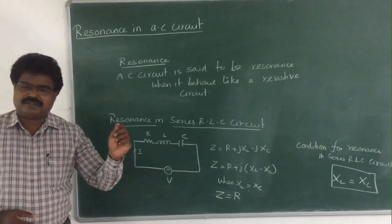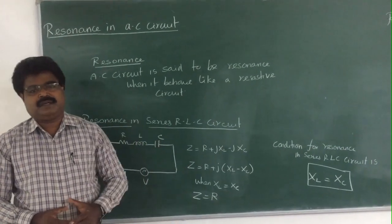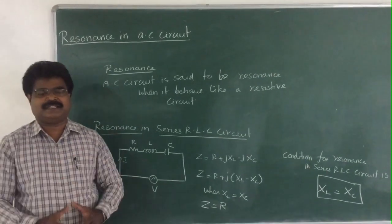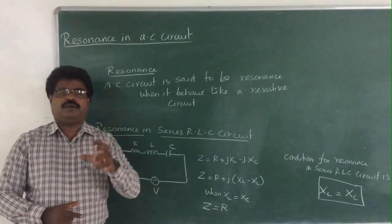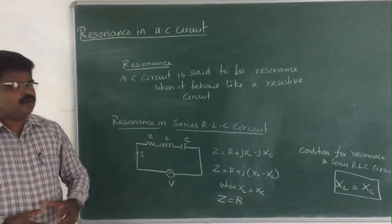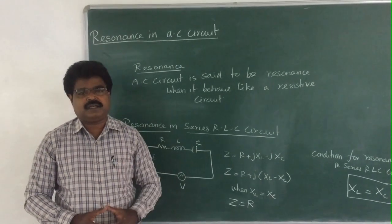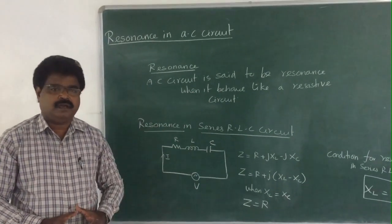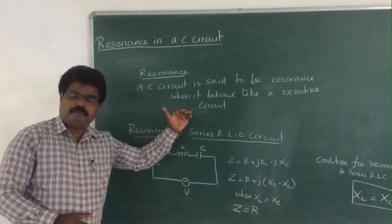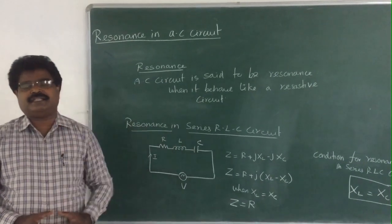An AC circuit is said to be in resonance if it behaves like a pure resistive circuit. An AC circuit normally consists of resistance, inductance, and capacitance. When this circuit behaves like a pure resistive circuit, the circuit is said to be at resonance. These resonance circuits are used in communication networks.